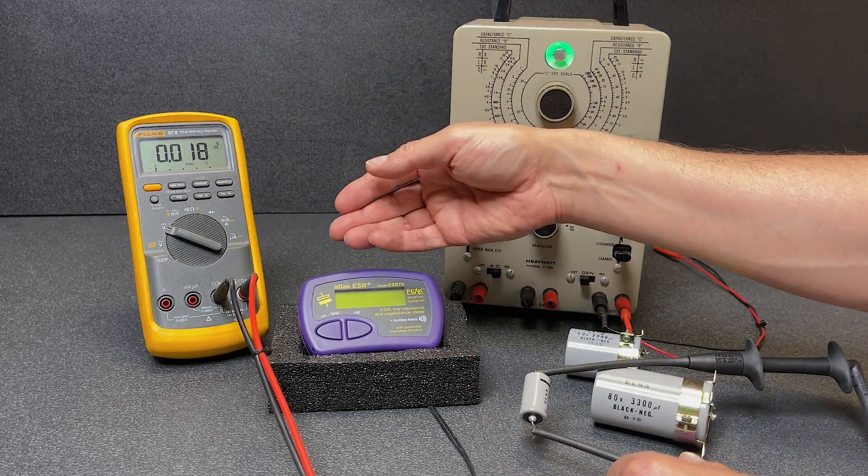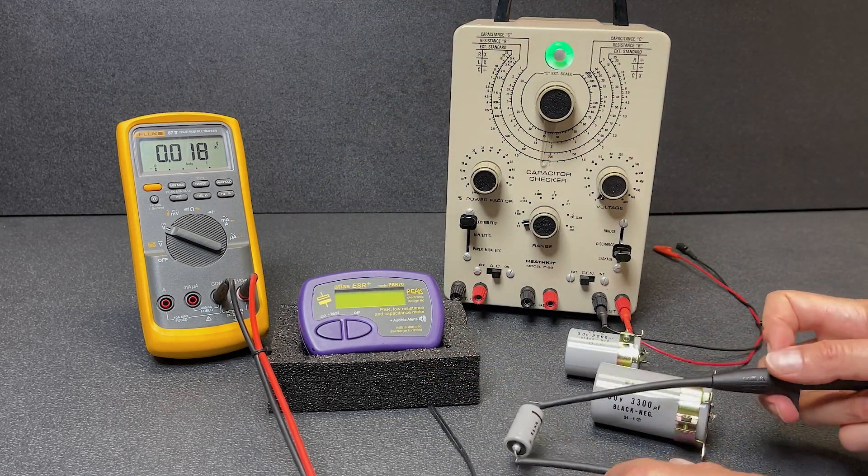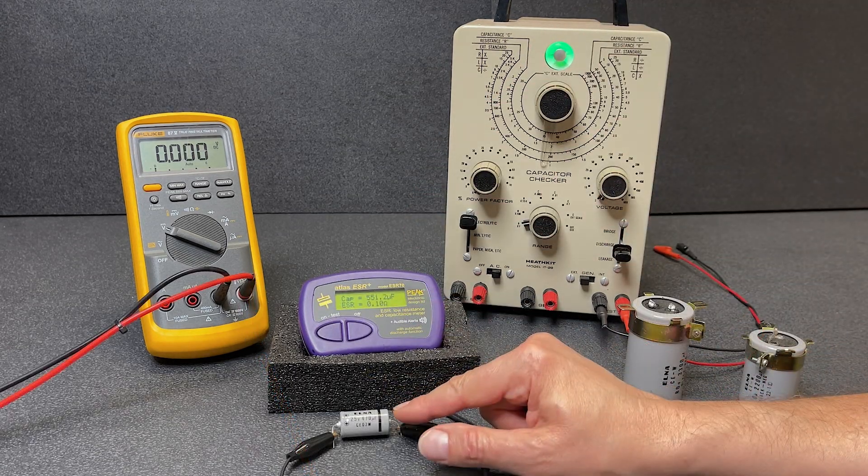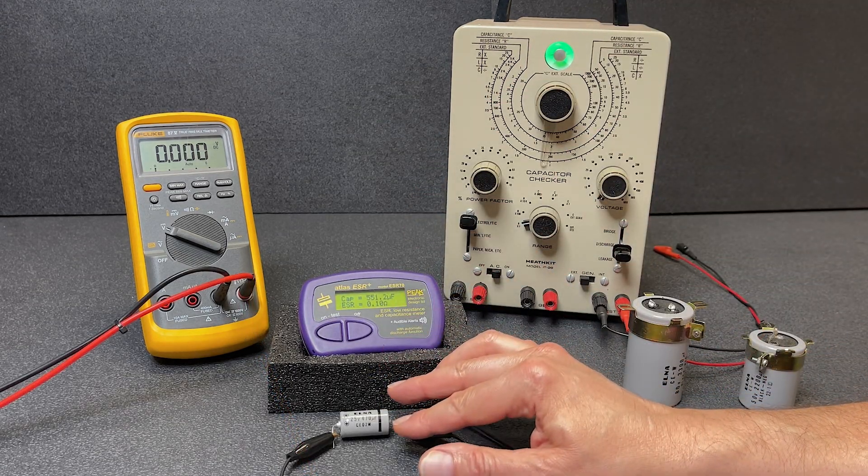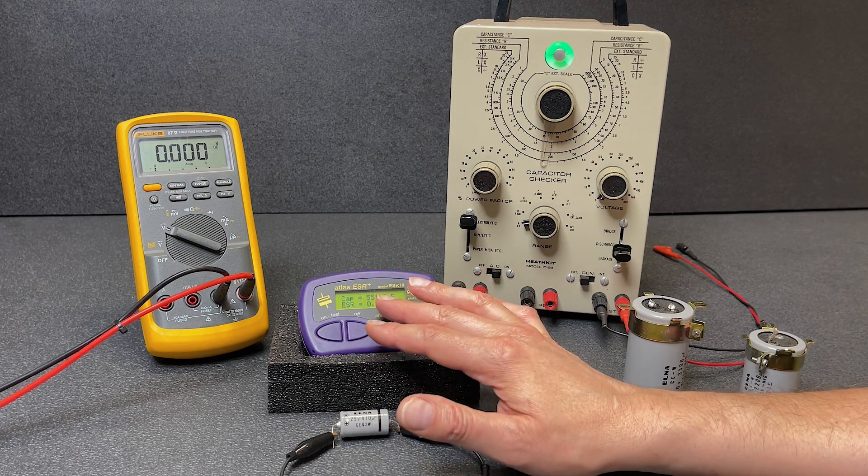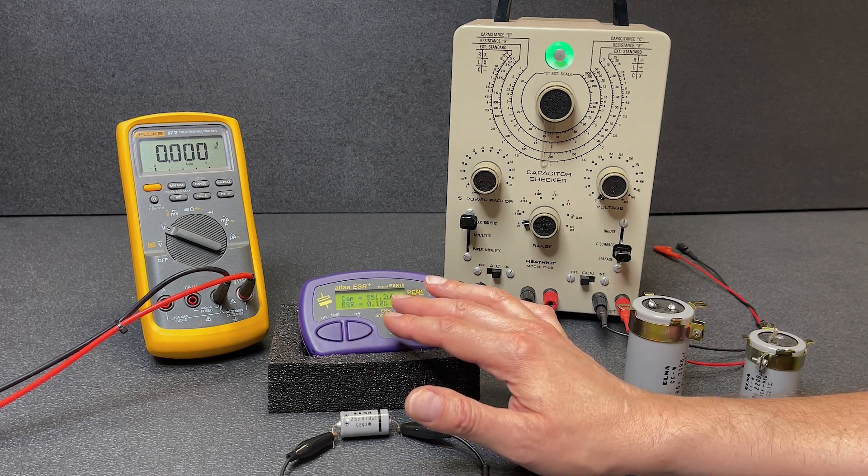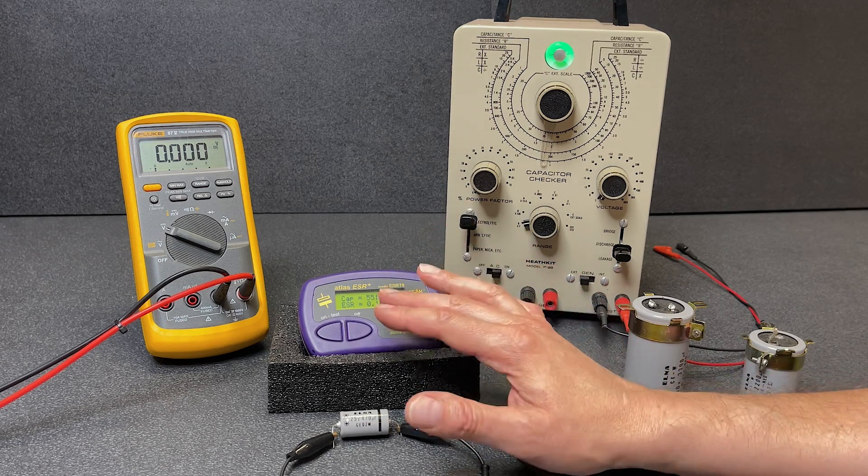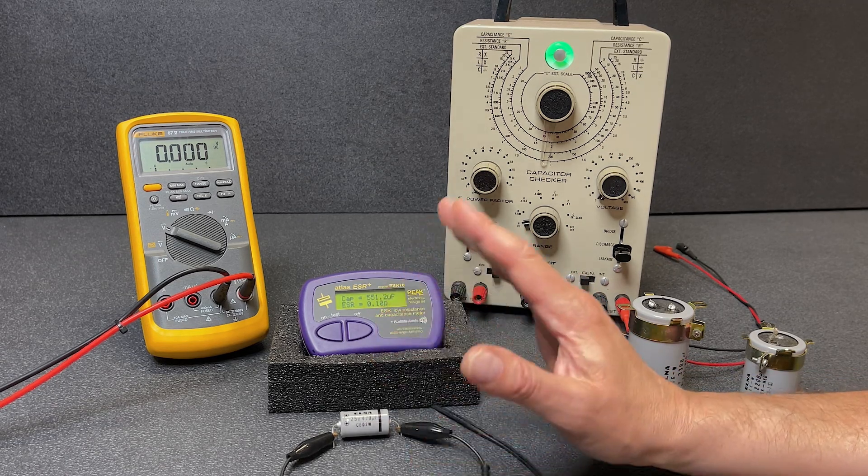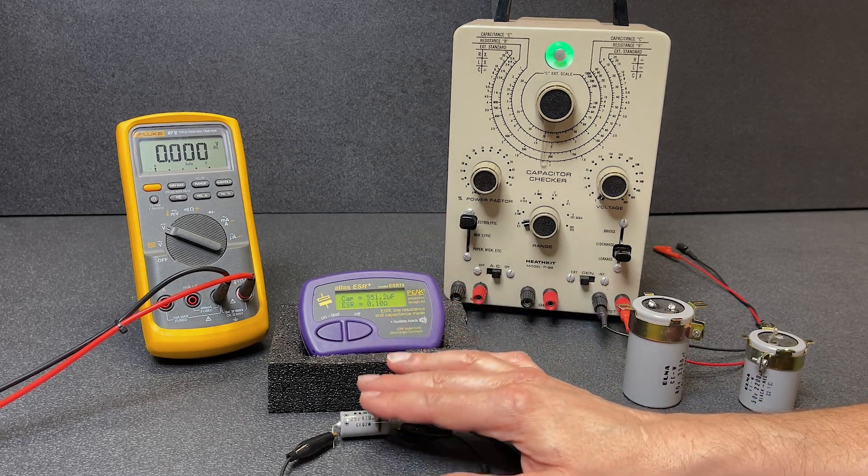OK, virtually no voltage on that cap, so that one's safe to proceed with. Let's check for ESR first. Our 470 microfarad capacitor is coming in at 551. Not bad, really. And the ESR is 0.1 ohms. Very good. As far as ESR, this capacitor is fine.